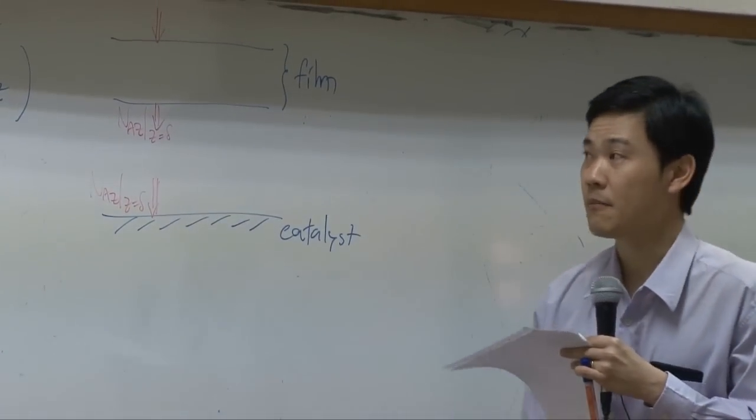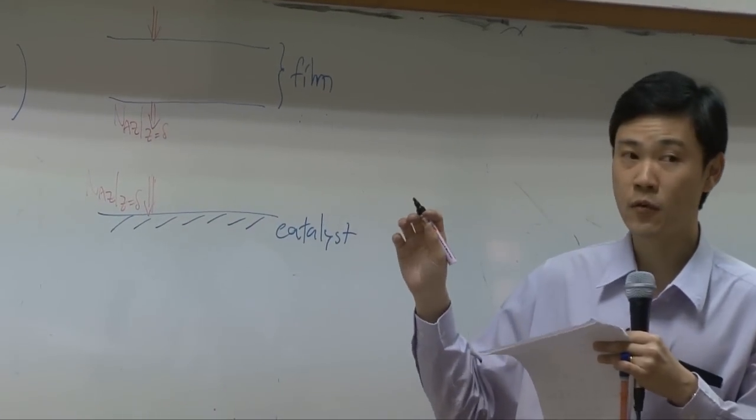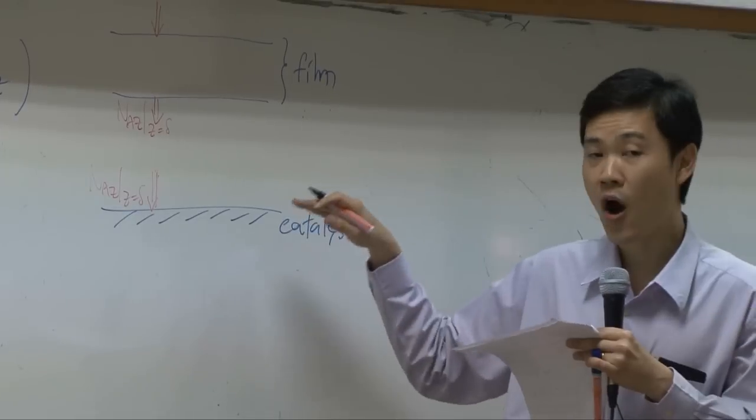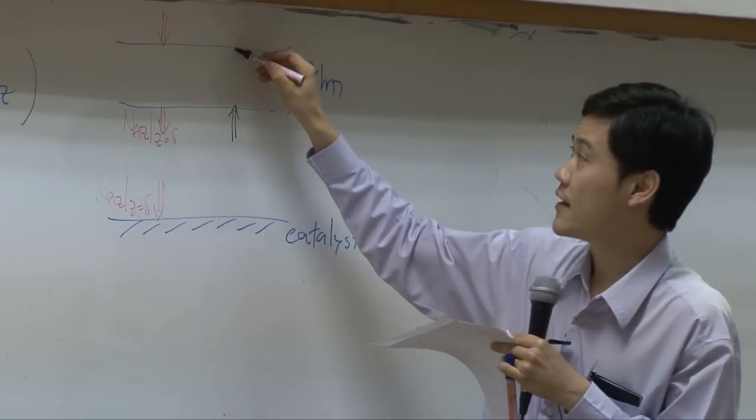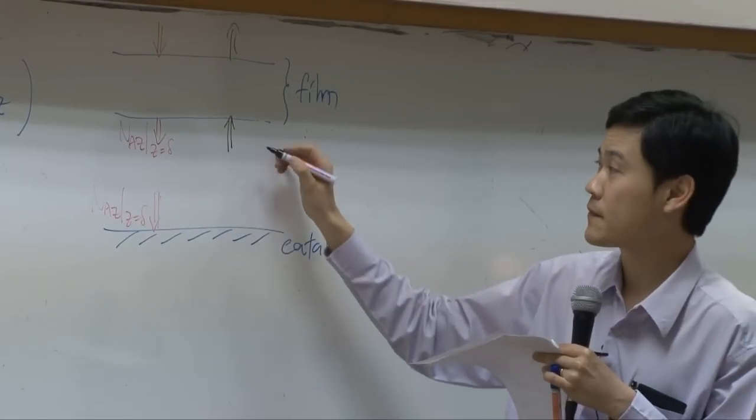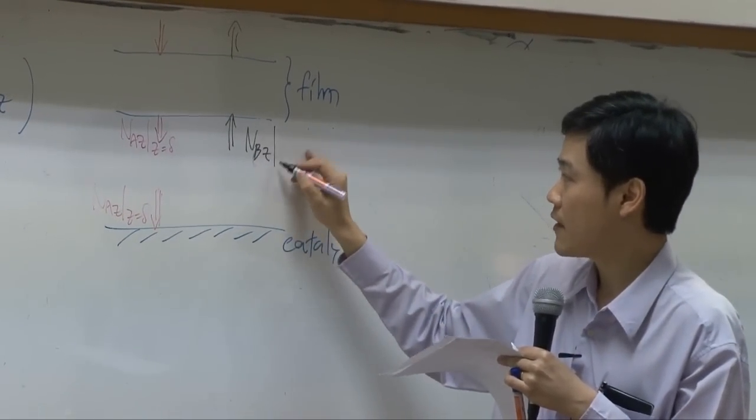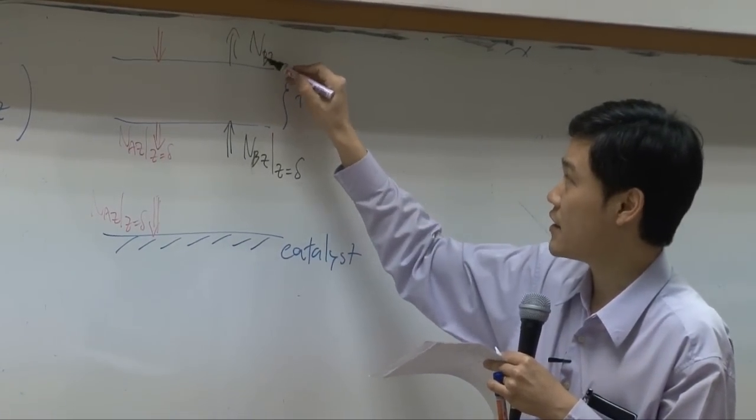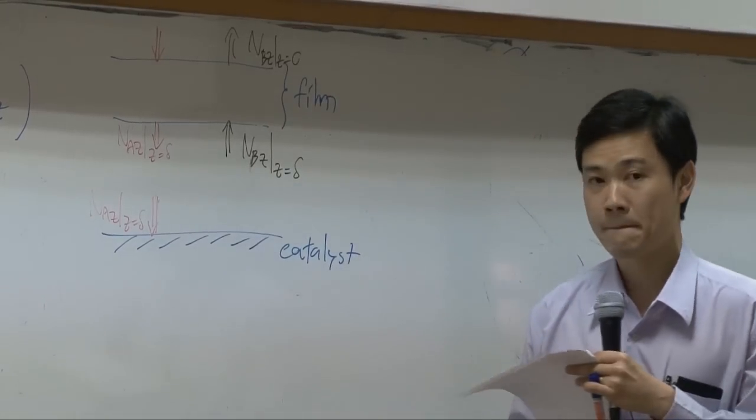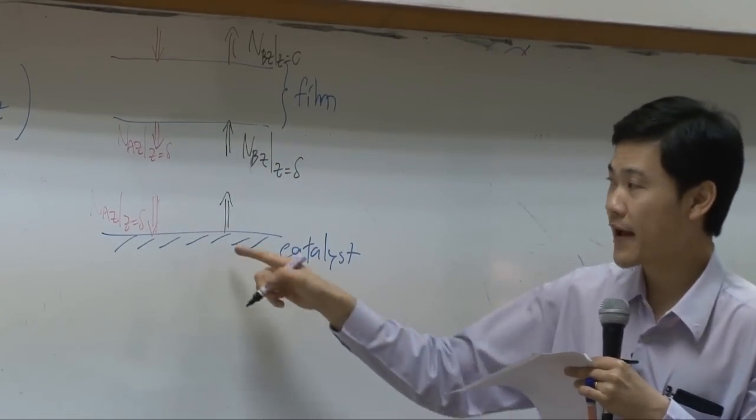Same thing applied for B. We know that B is generated from the reaction on the surface and it is diffused into the film and diffused out of the film. So here will be N_B_Z as Z equal to delta. There will be N_B_Z as Z equal to zero.